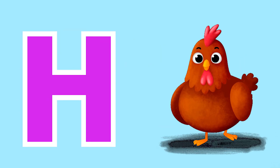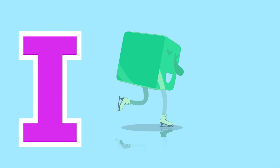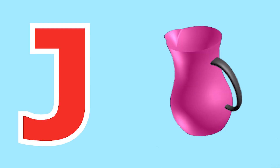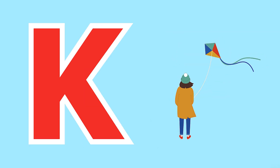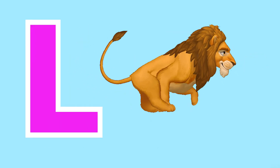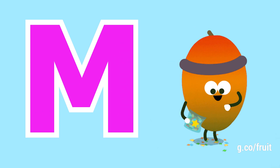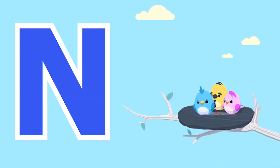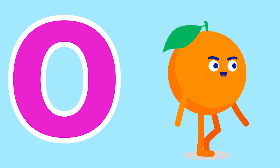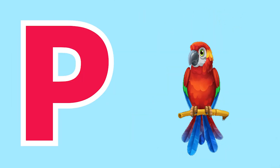H for Hen, I for Ice, J for Jug, K for Kite, L for Lion, M for Mango, N for Nest, O for Orange.